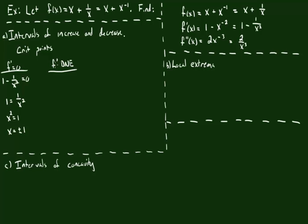On the other side, we have critical points where the derivative fails to exist. Where is this going to fail to exist? If you put 0 in the denominator of this fraction, the derivative will not exist — so this happens when x equals 0. So we have three critical points total: two where the derivative equals 0, and one where the derivative fails to exist.